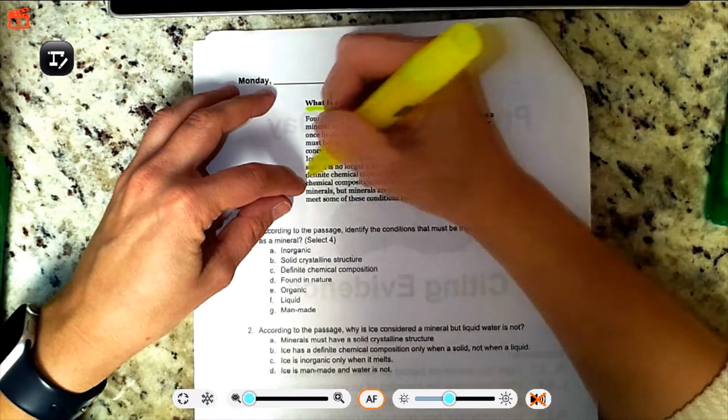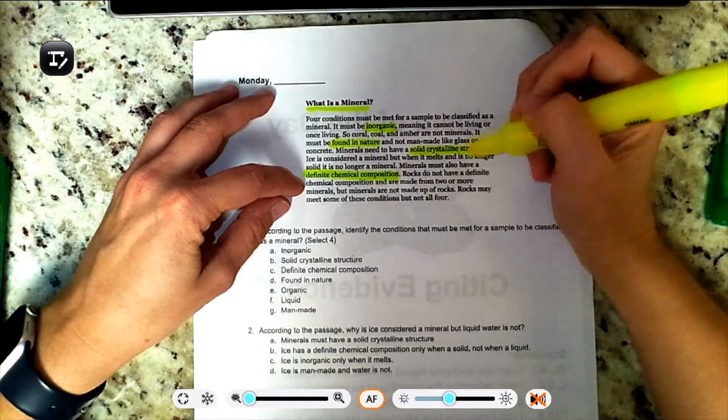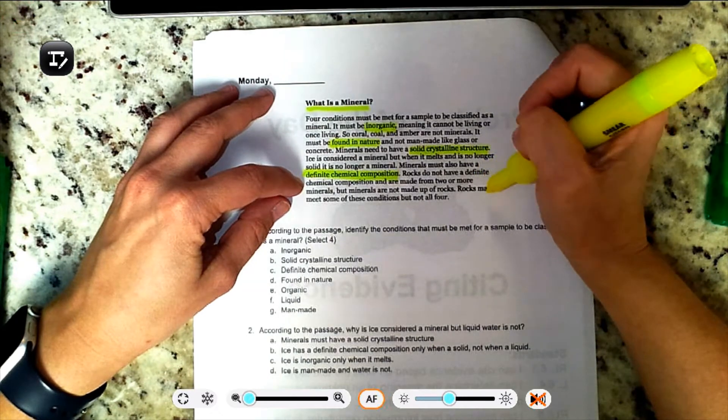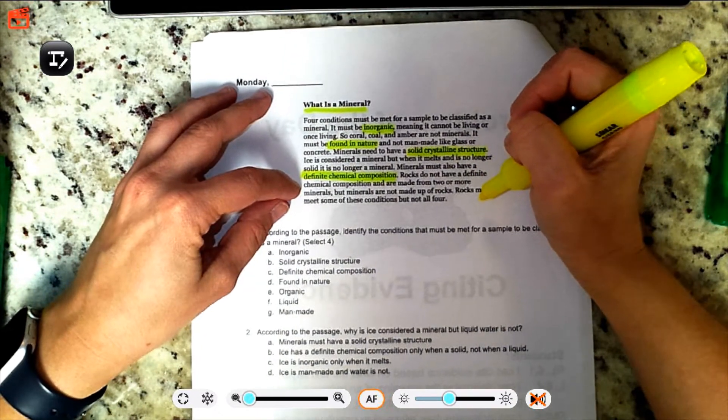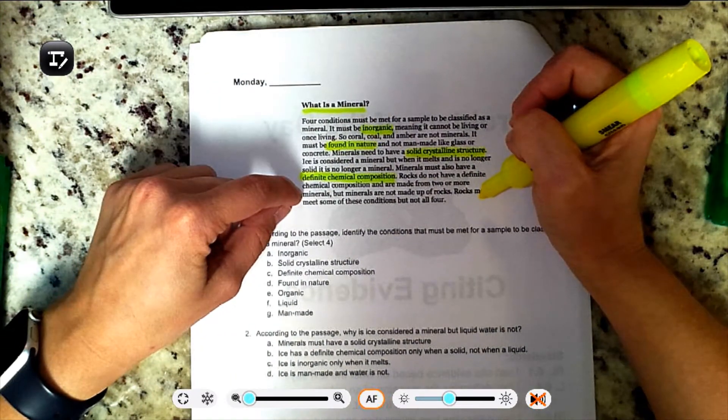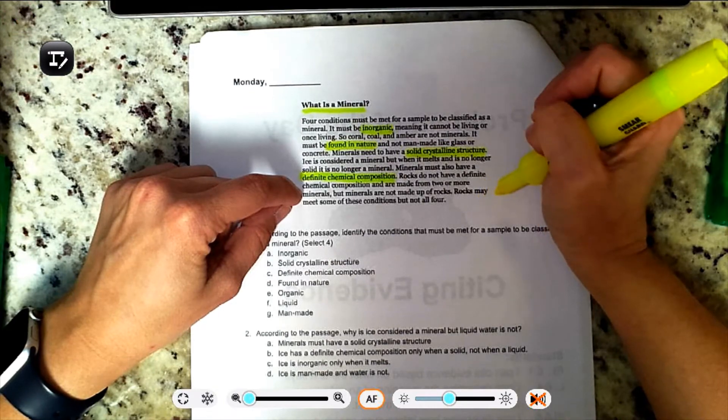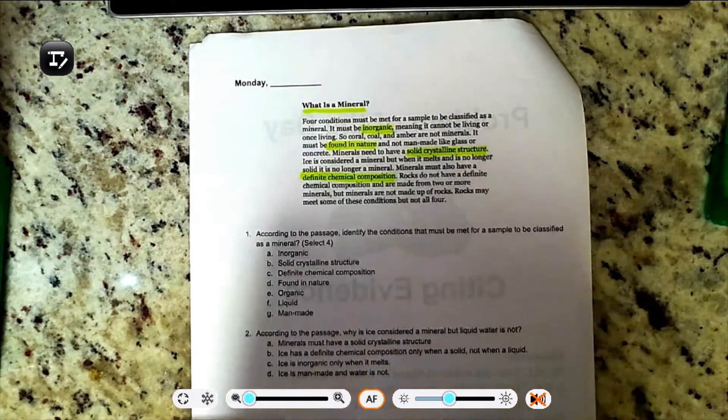Minerals must also have a definite chemical composition. Rocks do not have a definite chemical composition and are made from two or more minerals. But minerals are not made up of rocks. Rocks meet some of the conditions, but they do not meet all four.